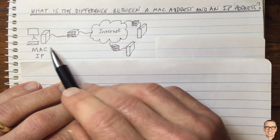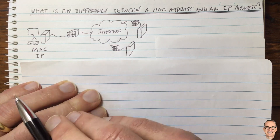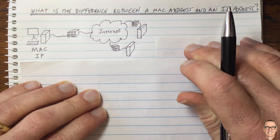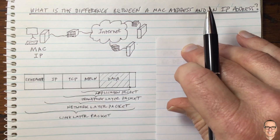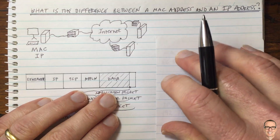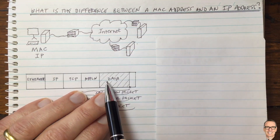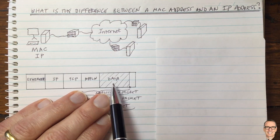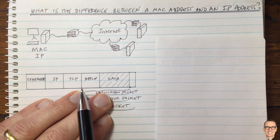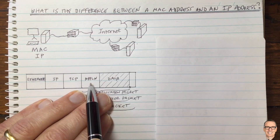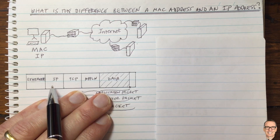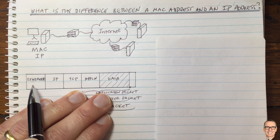Let's try to understand whether we actually need both the MAC address and the IP address. Looking at the structure of packets and where these addresses are: if this is the data of a packet — shown not to scale, as the data would be much longer in practice — here are the headers: an application header, a transport control protocol header, an IP header, and an Ethernet header.